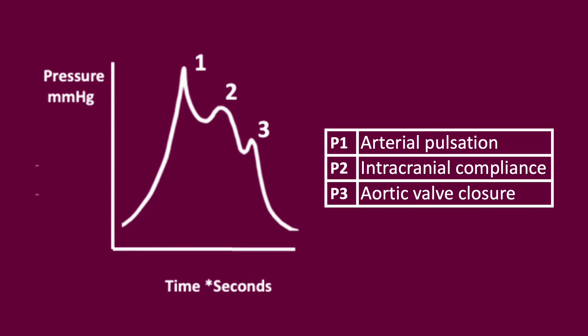This is a classical ICP waveform with pressure in millimetres of mercury and time in seconds. There are three points: P1 is the arterial pulsation, P2 is the intracranial compliance, and P3 is aortic valve closure.